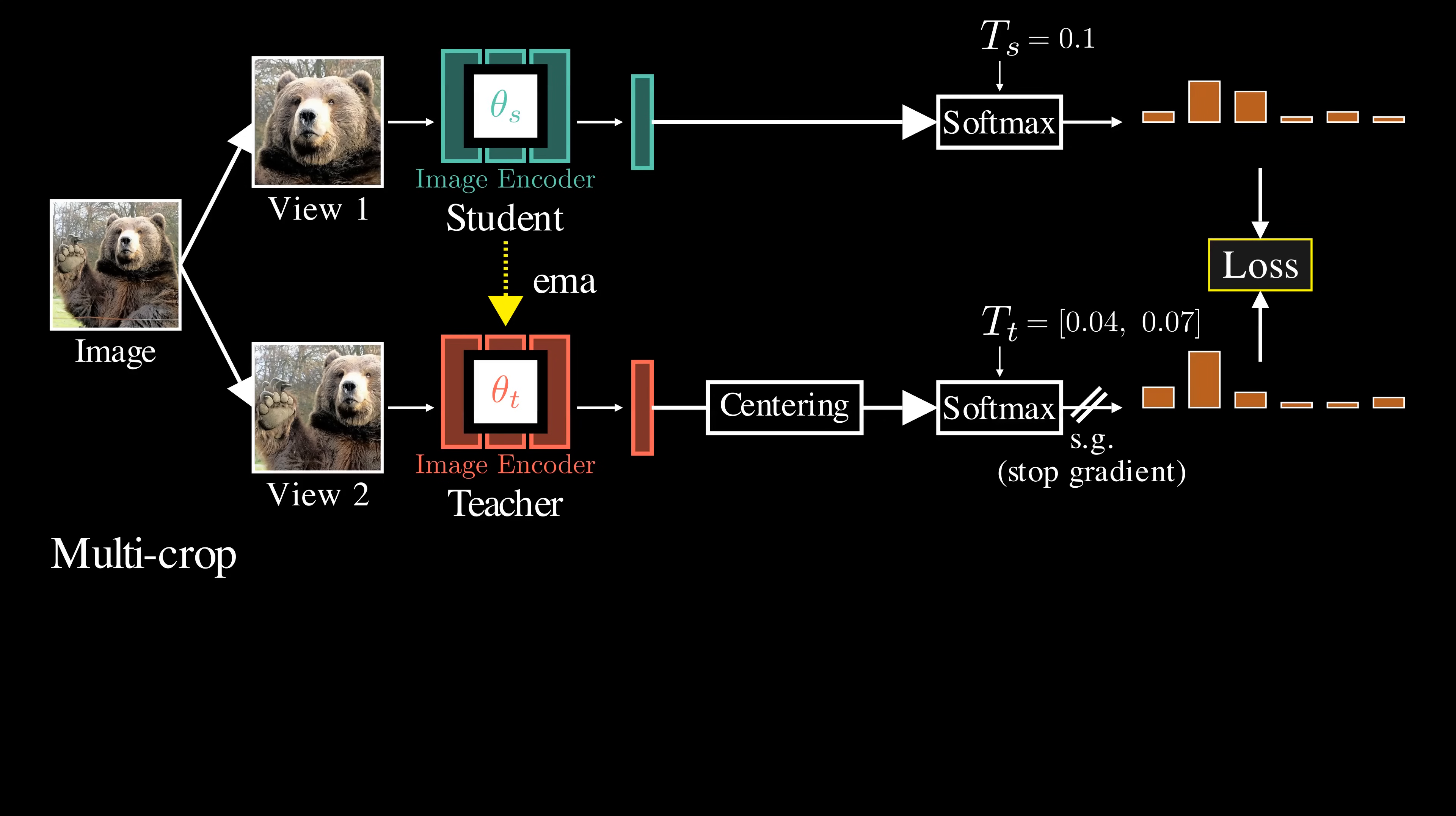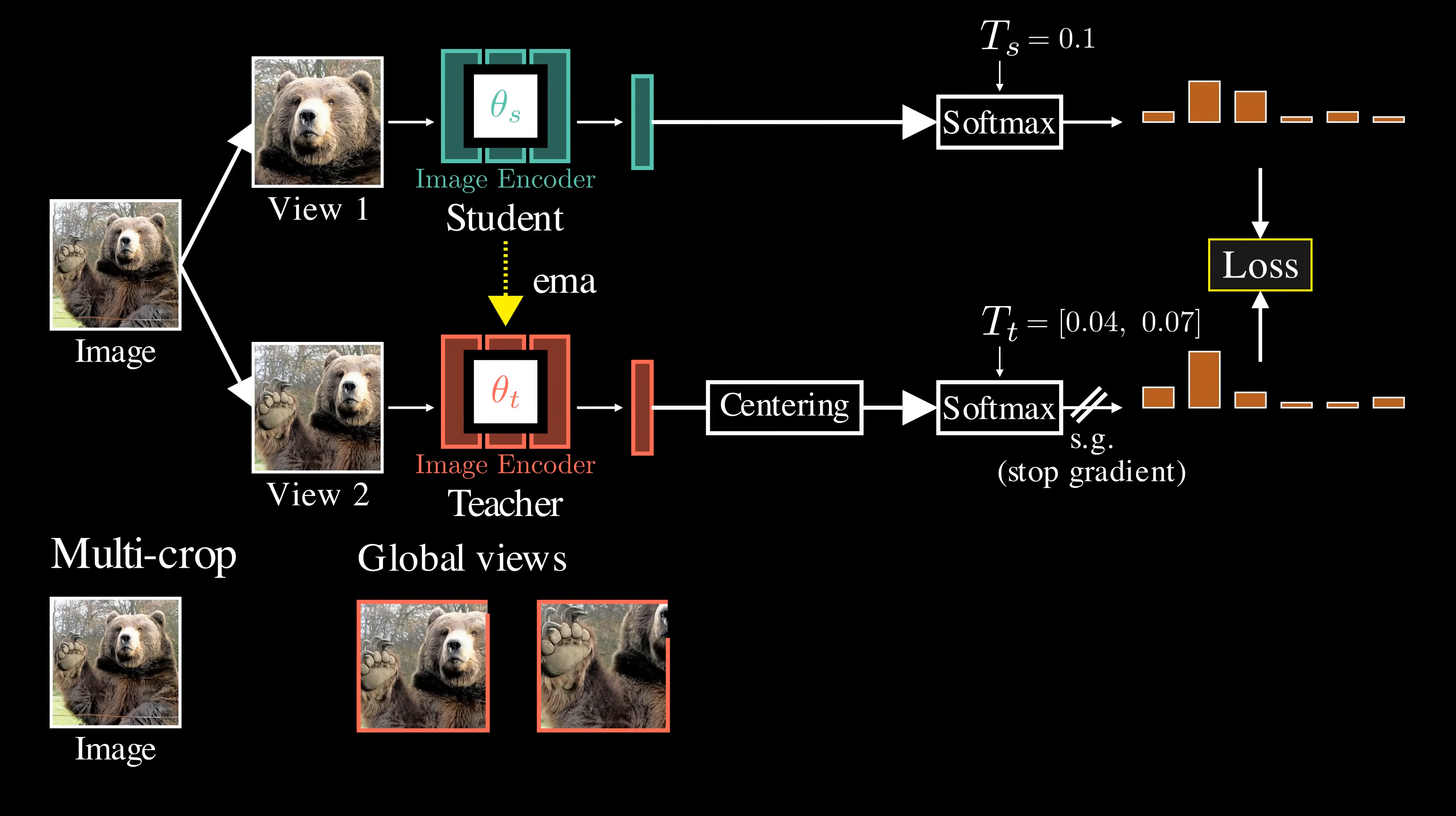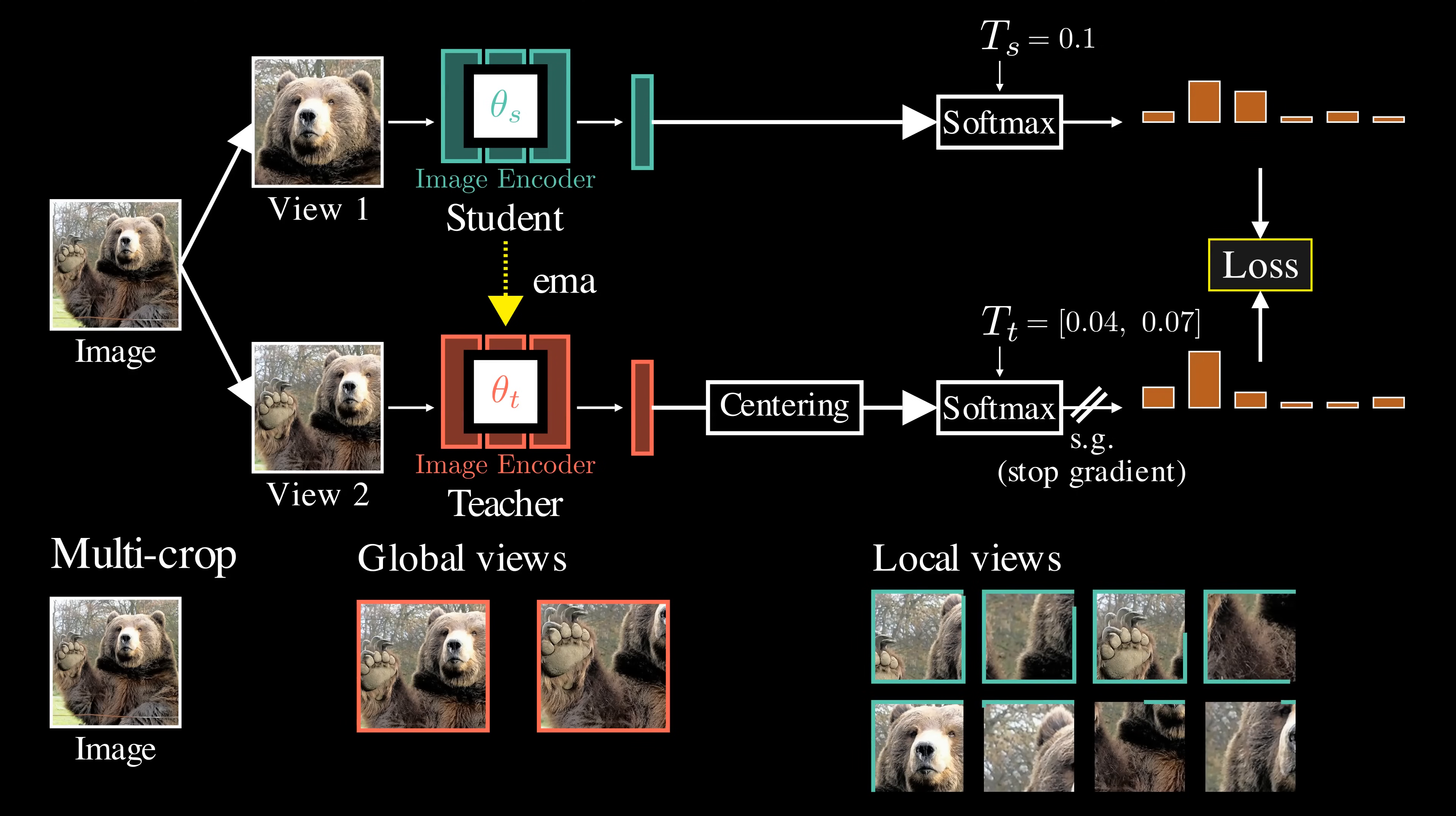Instead of using only two views, we create multiple crops of the input image. We make two large crops that cover larger regions of the image, called global views. We also make several smaller crops that focus on local regions. The teacher model only sees the global views that contain more information about the image, while the student uses both global and local views as the input.